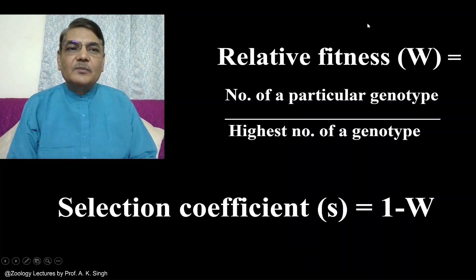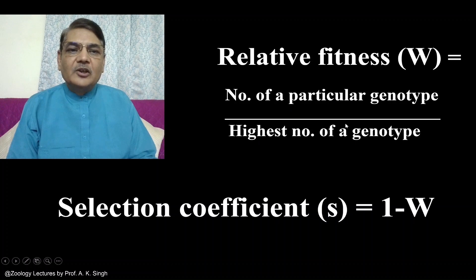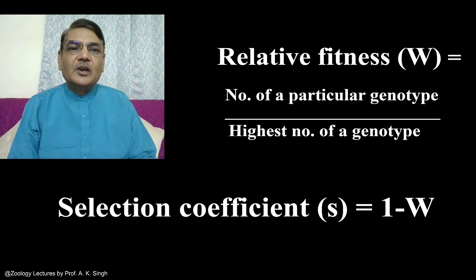Relative fitness, indicated by the letter W, can be calculated using a simple formula: the number of a particular genotype divided by the number of the genotype with the highest count.